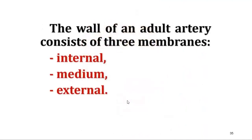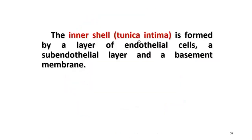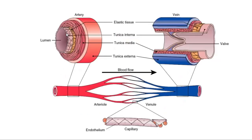The wall of an adult artery consists of three membranes: internal, medium, and external. The inner shell, tunica intima, is formed by a layer of endothelial cells, a subendothelial layer, and a basement membrane. There is a special endothelium structure including fenestrated endothelium. The endothelium can change when influenced by different toxins and other factors.